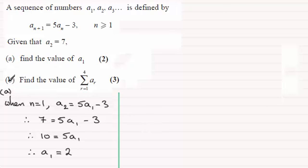And to do part b now, find the value of sigma r going from 1 to 4 of ar. So in order to do this, what I'm going to do is just write out first of all what we're given. I'd always tend to do this when I've got sigma notation.